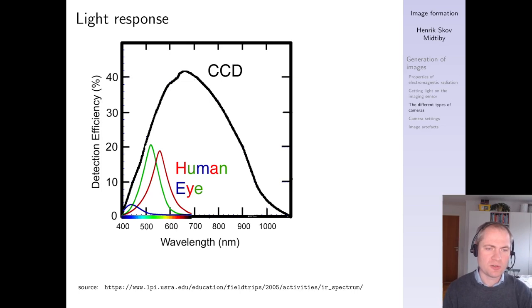So as I mentioned before, human eyes have three different color sensitive cones, that we are able to perceive the balance between the incoming light.